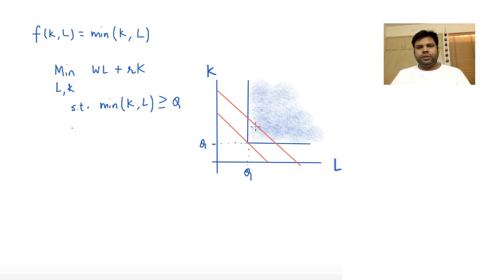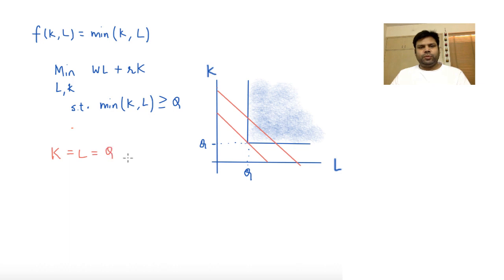The solution to the cost minimization problem is K equals L equals Q. The corresponding optimal cost is W·Q + R·Q, because K and L are both equal to Q.